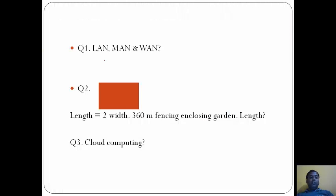Now coming to the questions. LAN, MAN, WAN - LAN is Local Area Network, MAN is Metropolitan, and WAN is Wide Area Network, so the answer is C. For the next question, length is equal to twice width. So twice width plus width plus twice width equals 6w equals 360, so w becomes 60 and length is 2w, that is 120. Answer is A, 120 meters.